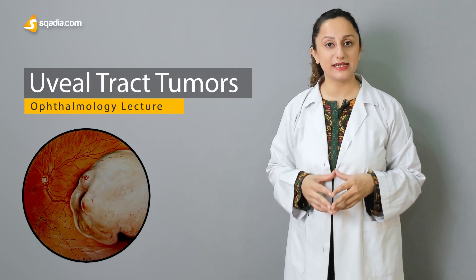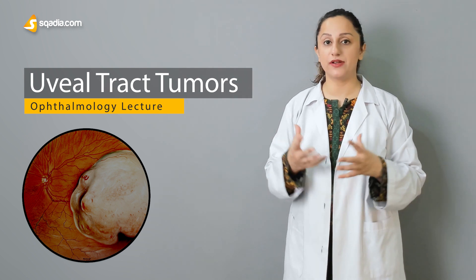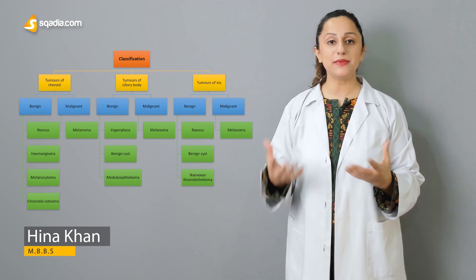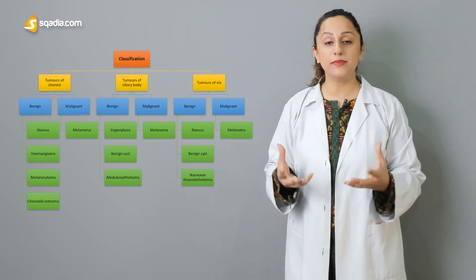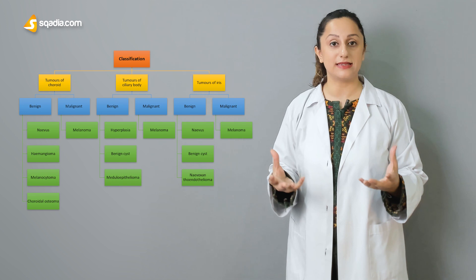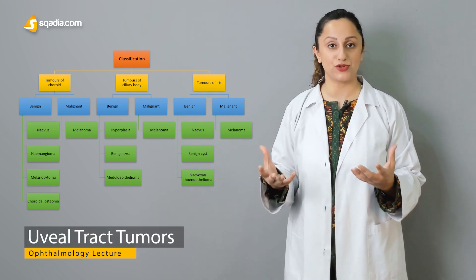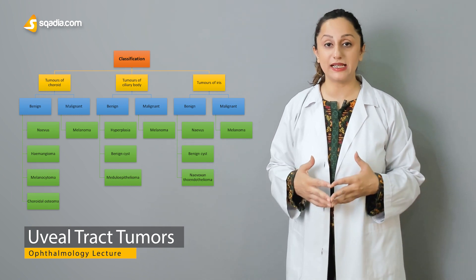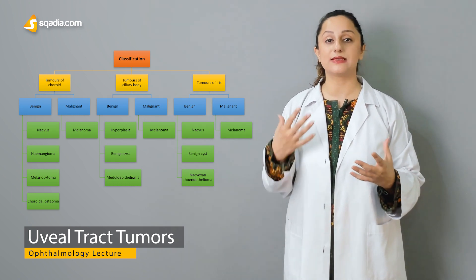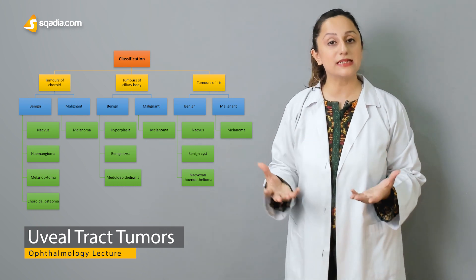Uveal tract tumors are neoplastic conditions arising in the uveal tract. The term uveal tract refers collectively to the iris, the ciliary body, and the choroid. As the name indicates, these neoplastic conditions can be benign as well as malignant, and can arise in all of these uveal tract structures.